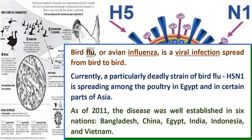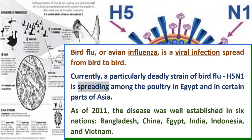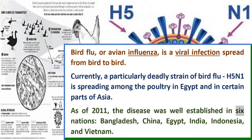Bird flu, or avian influenza, is a viral infection spread from bird to bird. Currently, a particularly deadly strain of bird flu, H5N1, is spreading among poultry in Egypt and in certain parts of Asia. As of 2011, the disease was well established in six nations: Bangladesh, China, Egypt, India, Indonesia, and Vietnam.